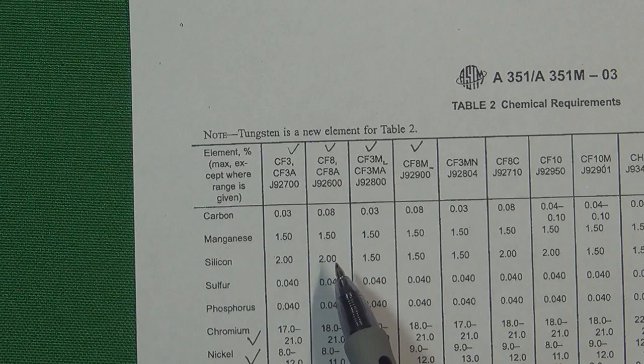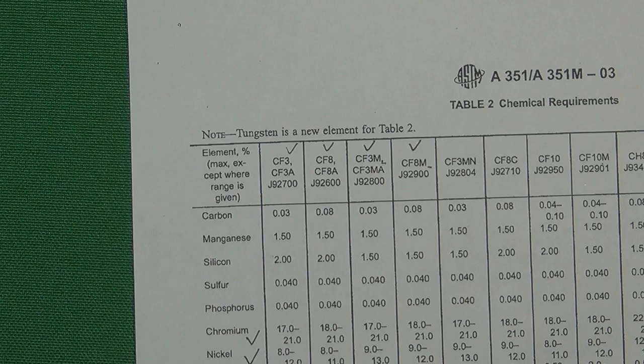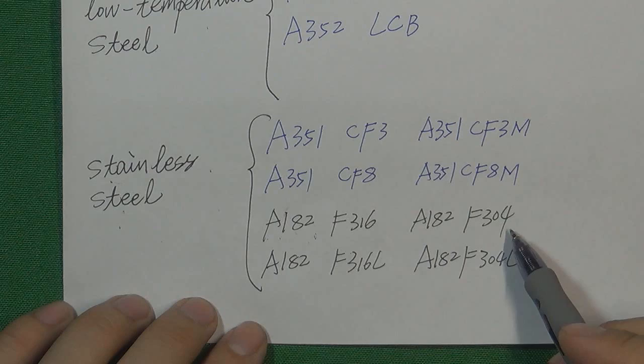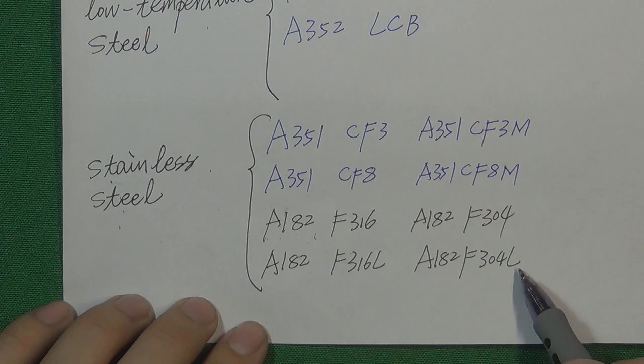Now we understand CF3M versus CF8M, and which one is better in each property. Similarly, F304L versus F304, and F316L versus F316 are easy to understand — because 'L' means low carbon content. So F304L and F316L have better corrosion resistance but slightly lower mechanical strength compared to F304 and F316. That is the basic principle for stainless steel.